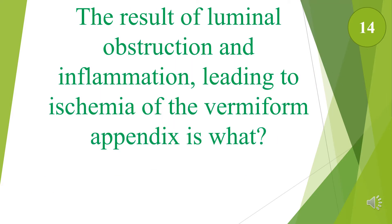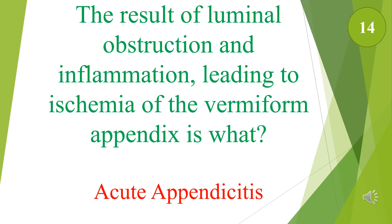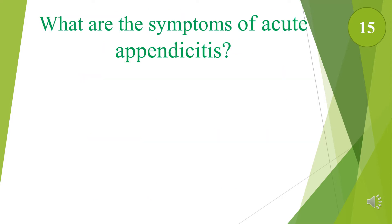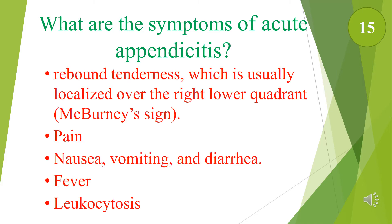The result of luminal obstruction and inflammation leading to ischemia of the vermiform appendix is called acute appendicitis. What are the symptoms of acute appendicitis? Patients usually present with pain or rebound tenderness over McBurney's point — called McBurney's sign — as well as nausea, vomiting, diarrhea, fever, and a very high white blood cell count called leukocytosis.